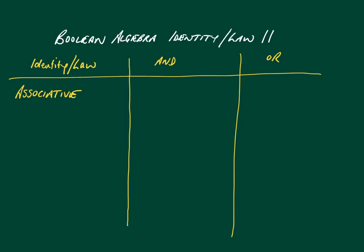With associative, it's just like normal arithmetic. It's the order we apply the operations when two or more of the same operator are involved — it doesn't matter. So if we have a AND b, and the result of that is ANDed with c, it's exactly the same as a AND c ANDed with b. With OR, associative is the same: a OR b OR c is the same as c OR b OR a.